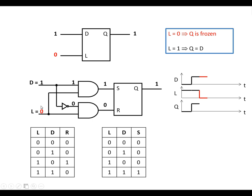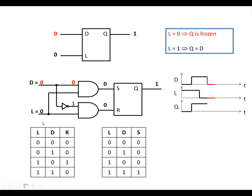Now we're going to make the latch go low. What this does is put a 0 into one of the inputs of both of these AND gates, meaning that the output of each gate is going to be 0. A 0 and a 0 going into the bistable is the no-change state, so the output remains high. And even if we change D, the inputs of the bistable are going to remain low, so it's the no-change state.